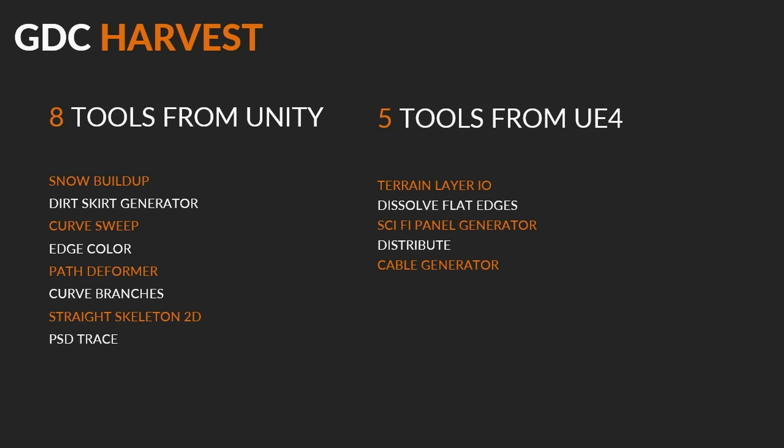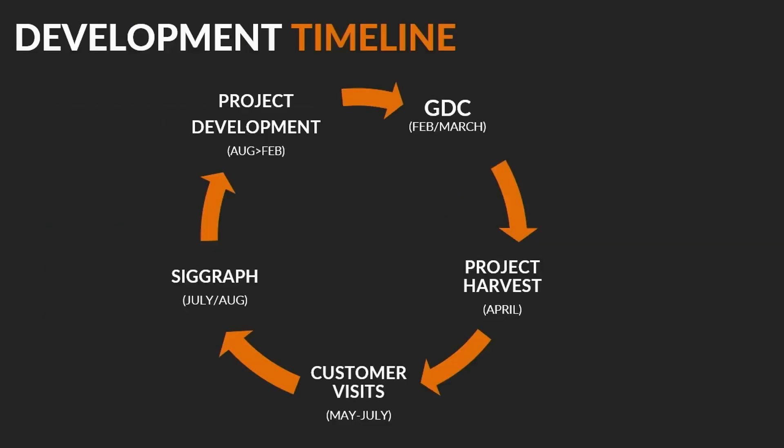This is the second year we've done a full GDC project, and now a little pattern is starting to emerge. It kind of starts up at GDC, then we do a harvesting process in April, some customer visits and trips May through July, then SIGGRAPH is the other big event of the year, and then we go back into project development mode. We found it works well — time to go heads down and build something production-ready.